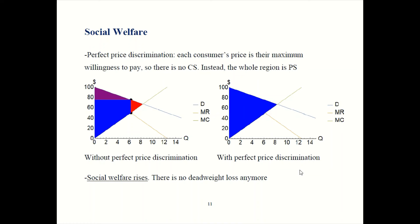Some final notes: perfect price discrimination does not actually exist, because we don't know each consumer's maximum willingness to pay. You could try surveying consumers and asking them, but they won't answer honestly. If they know you're going to charge them the maximum you can get away with, they'll tell you a lower number. If you ask someone willing to pay $100 what the most they'd pay is, they won't say $100 — they'll say something like, 'I'm having a really hard time affording stuff, the very most I'm willing to pay is $40.' So surveys won't work; consumers will lie and you can't get the information that way.